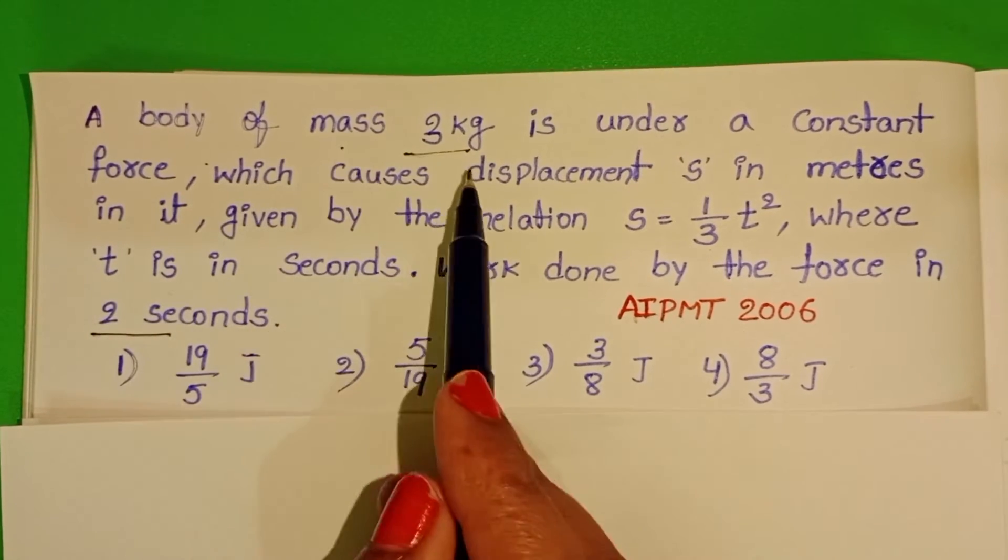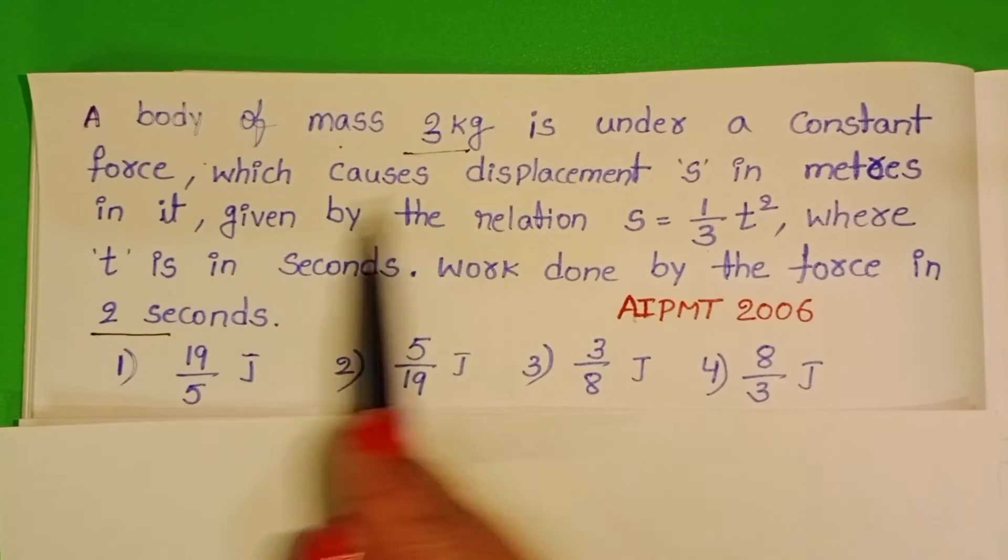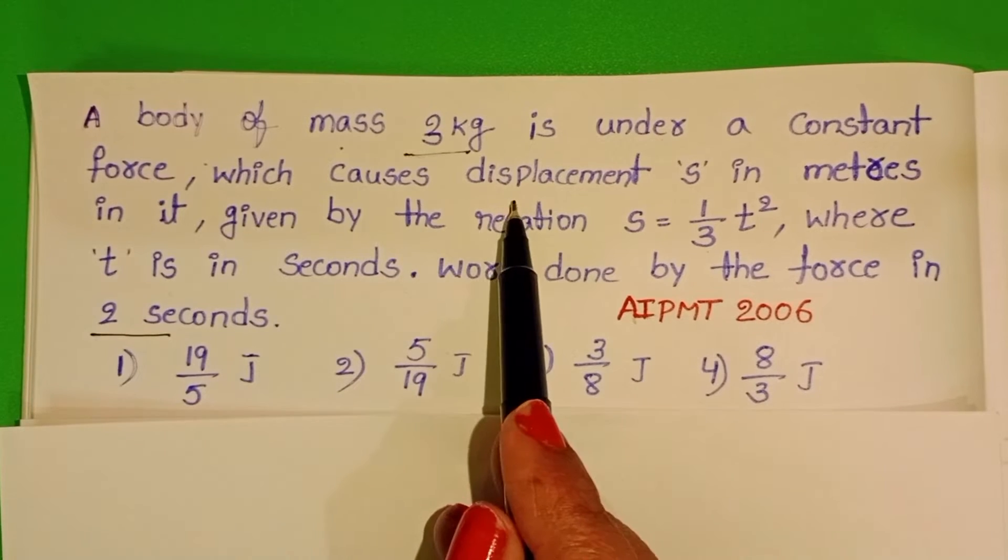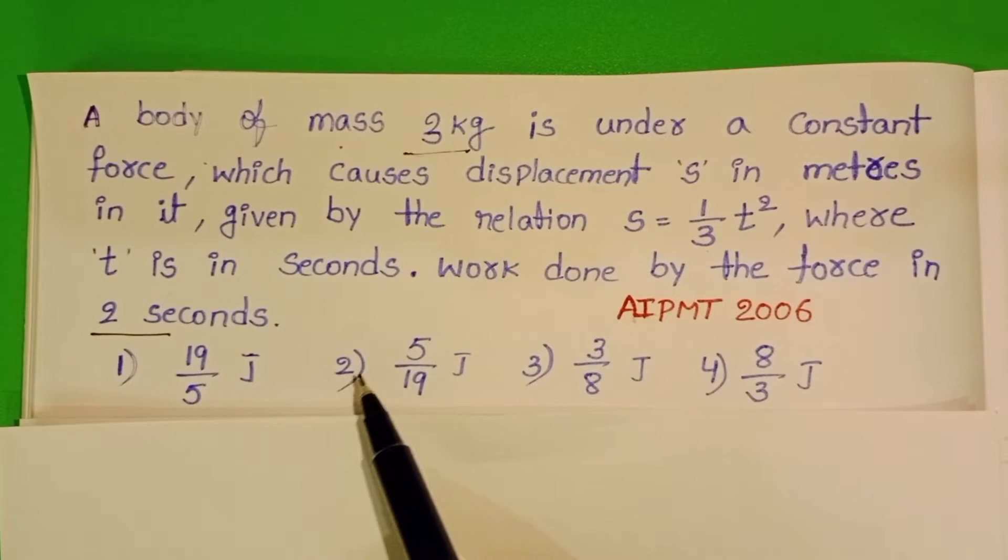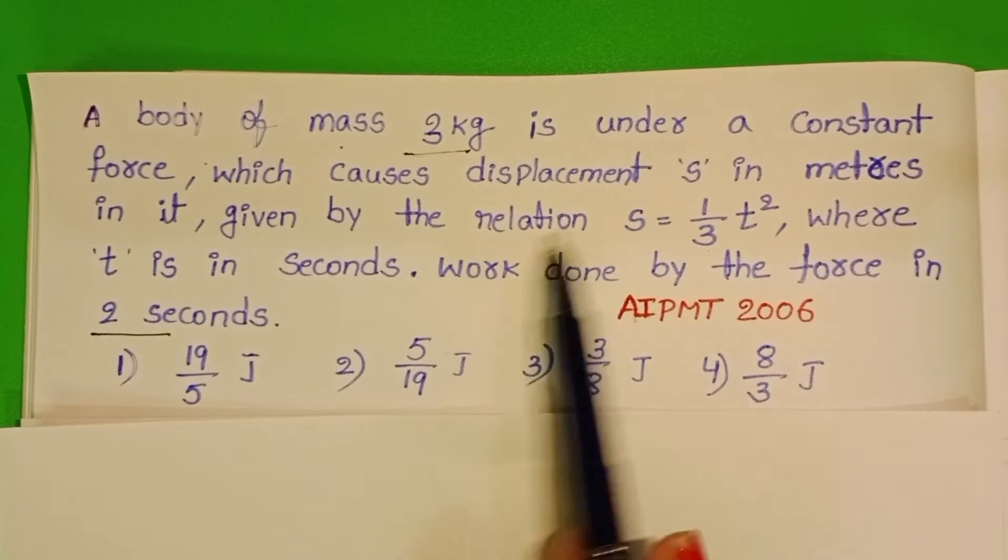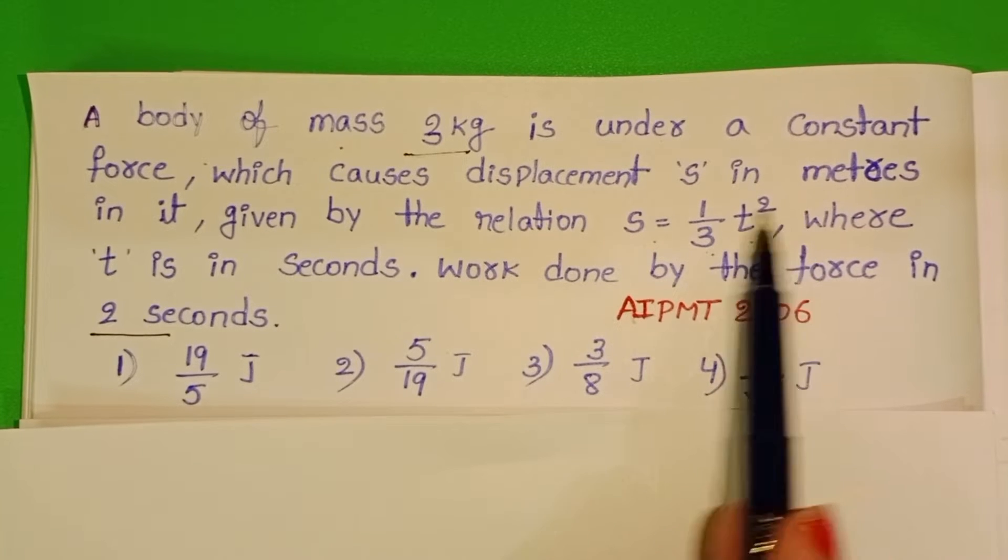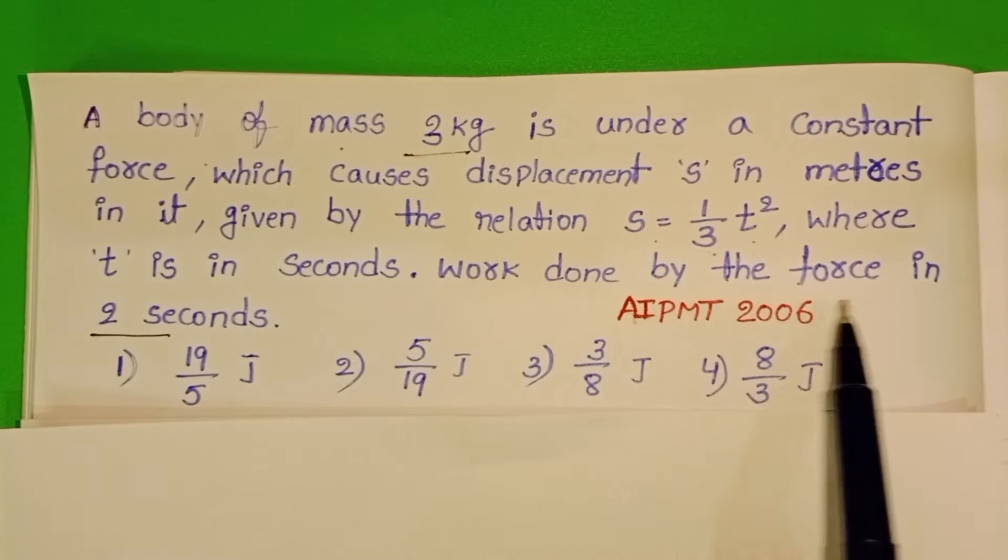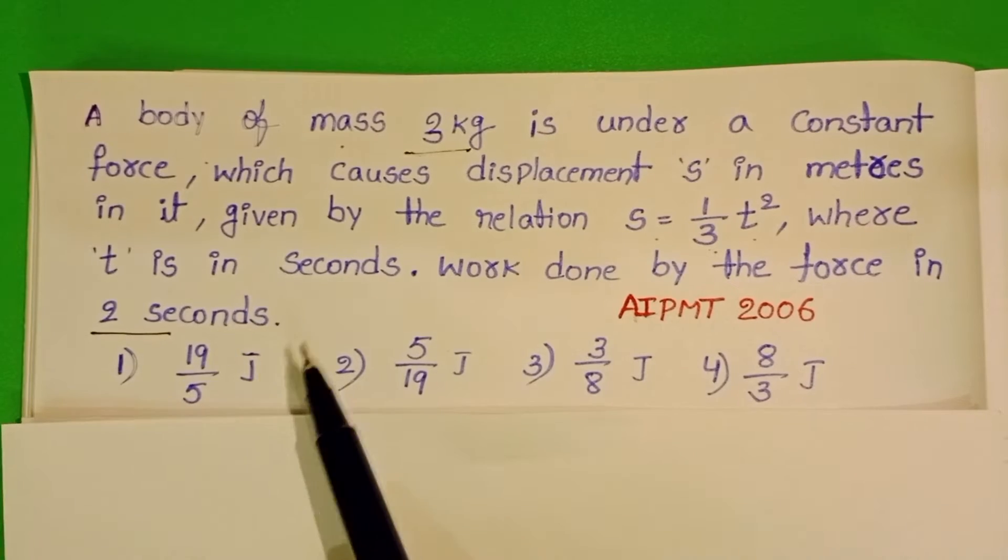A body of mass 3 kg is under a constant force which causes displacement S in meters. The given relation is S equals 1 by 3 T square, where T is in seconds. Find the work done by the force in 2 seconds.